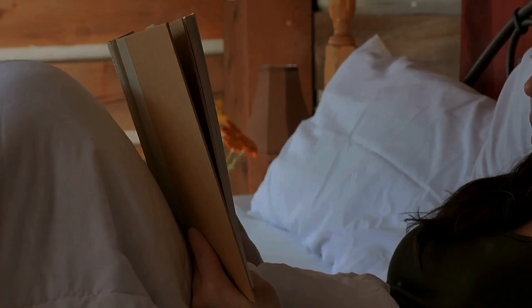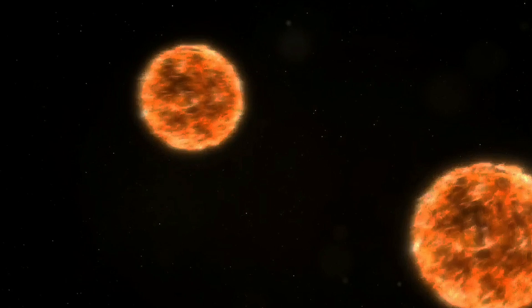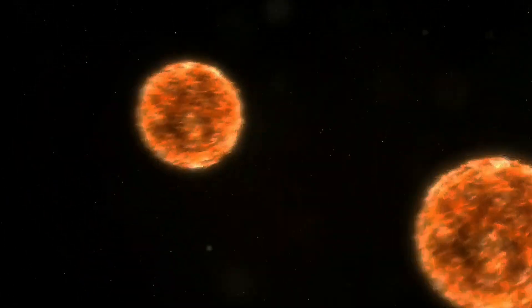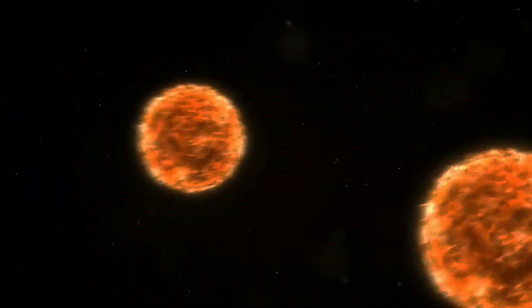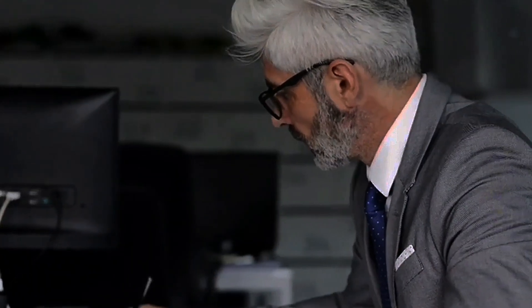Gravitational waves emitted by binary systems lead to orbital decay as the system loses energy. This was first observed in the binary pulsar PSR 1913 plus 16 by Hulse and Taylor, earning them the Nobel Prize.